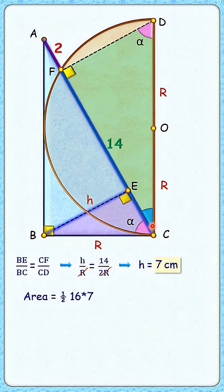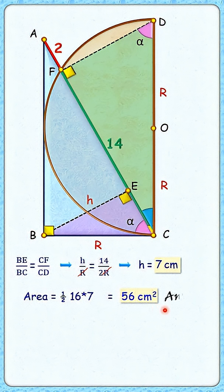So area of this triangle is half of 16 times 7 that's 56 cm square and that's our answer.